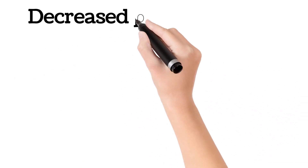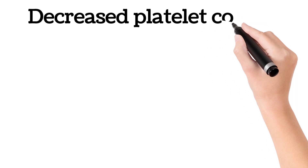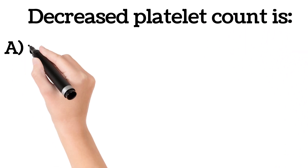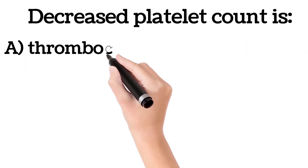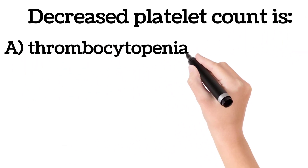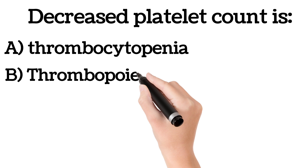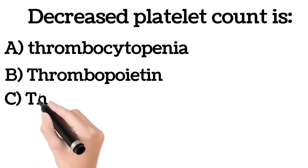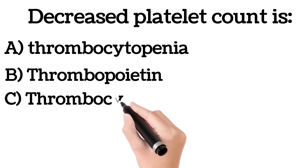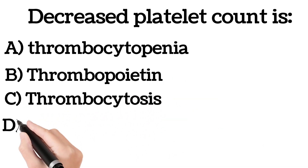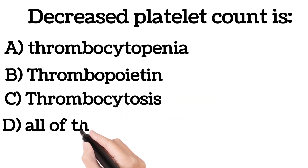Decreased platelet count is: A. Thrombocytopenia, B. Thrombopoietin, C. Thrombocytosis, D. All of the above.